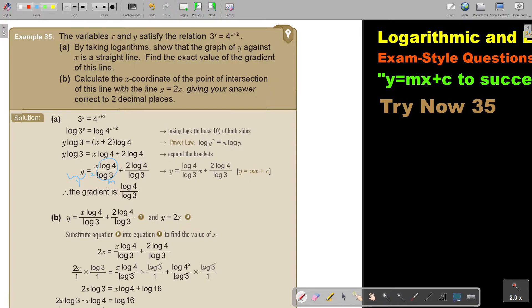So this is y, this is y, this is m, this is x, and this is c. So the gradient will be log 4 divided by log 3.